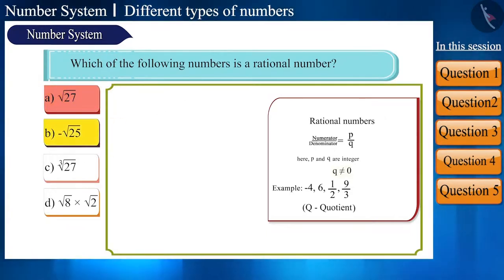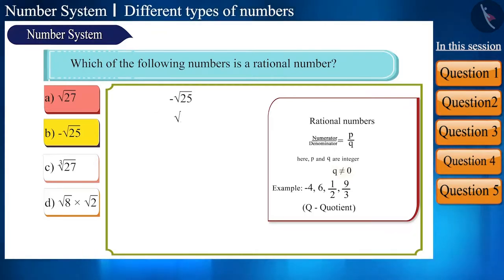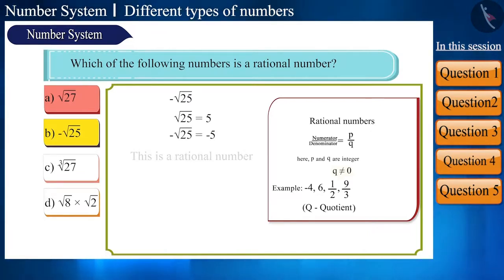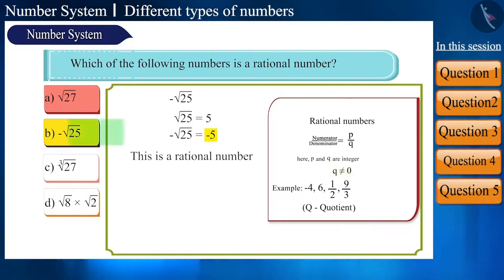Next option: −√25. Here we take the square root of 25, which is 5, and then put a minus sign, which makes it −5, and that is a rational number.